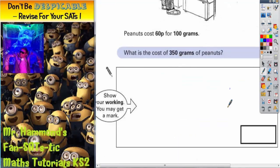What is the cost of 350 grams of peanuts? Well, we need a good clear way of setting this out. So the first 100 grams is going to cost us 60p.